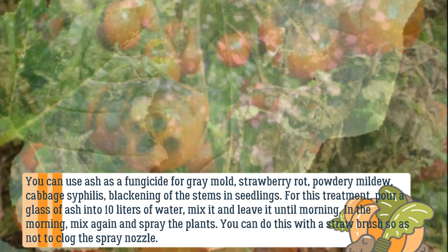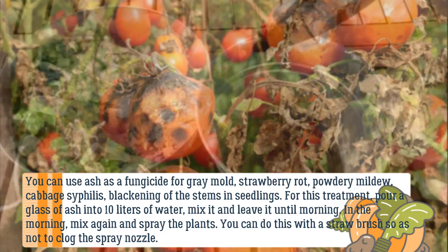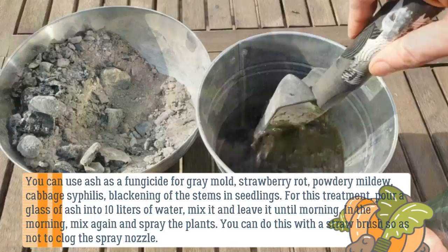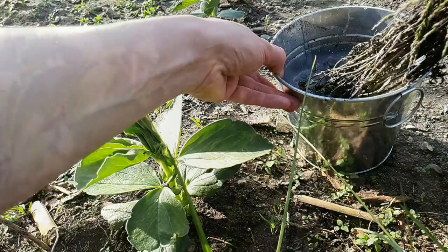For fungicide treatment, pour a glass of ash into 10 liters of water, mix it, and leave it until morning. In the morning, mix again and spray the plants. You can do this with a straw brush so as not to clog the spray nozzle.